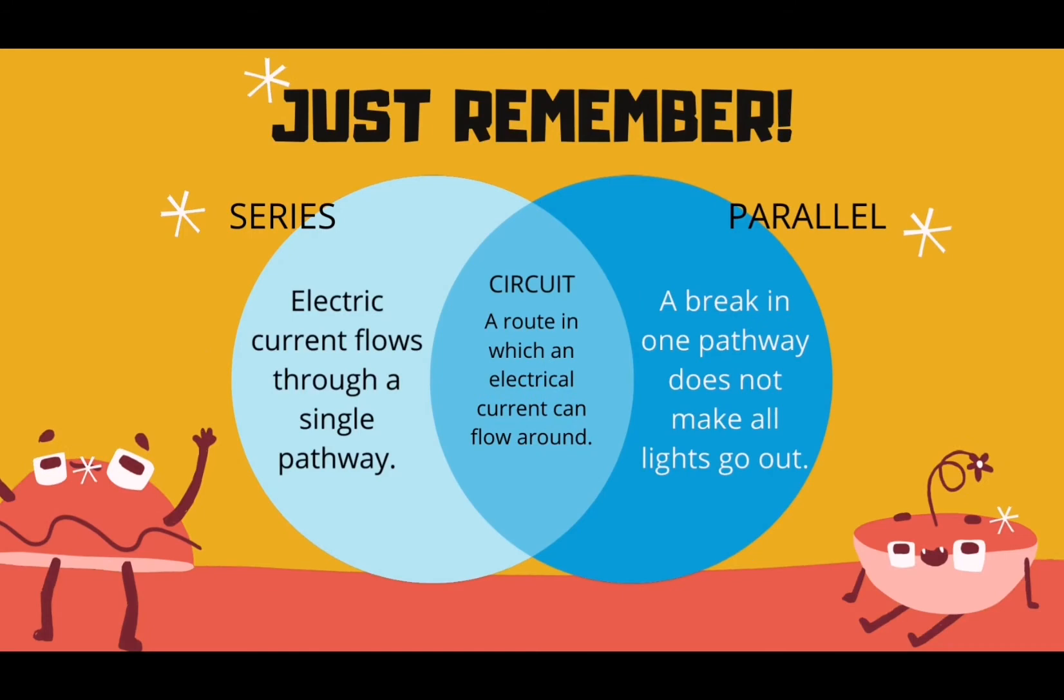Just remember that series and parallel are both circuits in which an electric current can flow around. In series circuit, electric current flows through a single pathway. While in parallel circuit, a break in one pathway does not make all the lights go out.